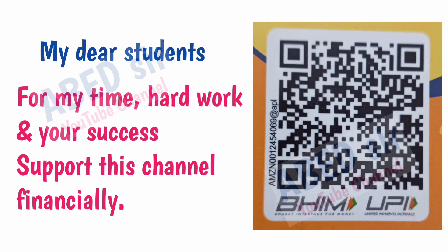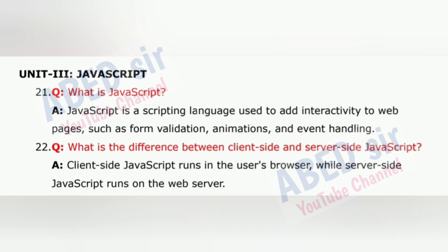Unit 3: JavaScript. Question 21: What is JavaScript? JavaScript is a scripting language used to add interactivity to web pages, such as form validation, animations and event handling.